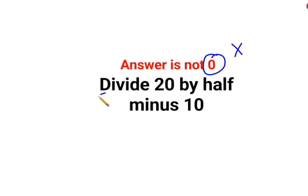Now let's write this in its numerical form. We have 20 divided by half minus 10.